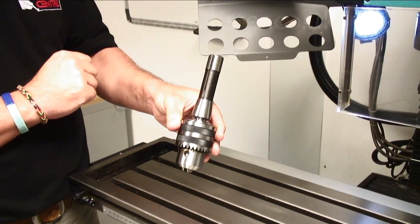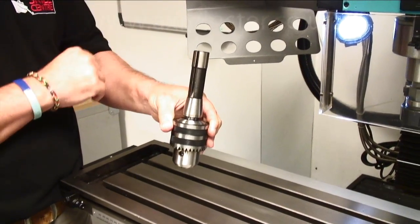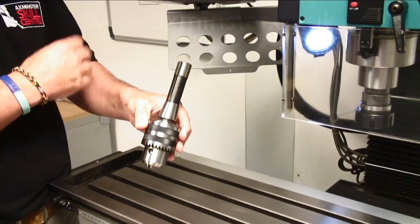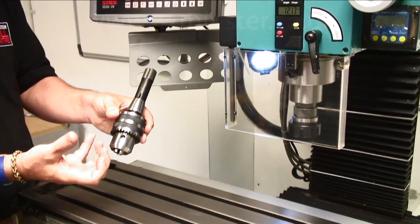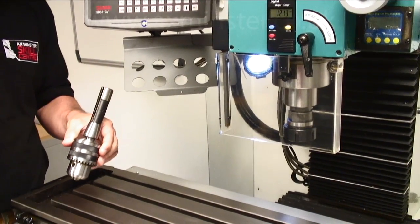So really accurate locating and then of course held in with a drawbar also. The machine comes with this drill chuck. It also comes with the collet chuck as well.